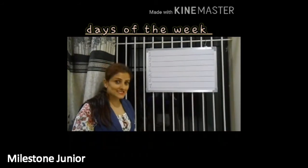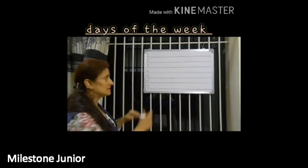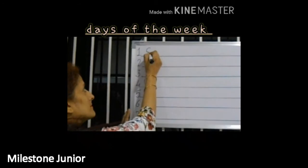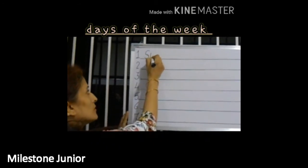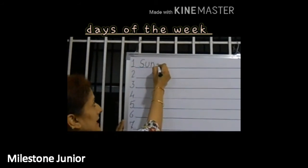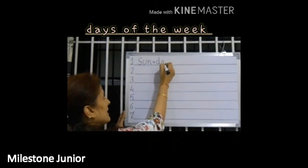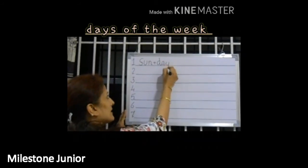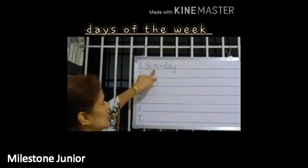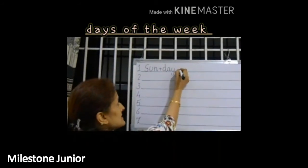Now let's start with the spellings. First is Sunday. What is the spelling of sun? S... U... N — Sun. Day: D... A... Y — Day. Sun Day. What is the spelling of sun? S-U-N, Sun. D-A-Y, Day. That is Sunday.